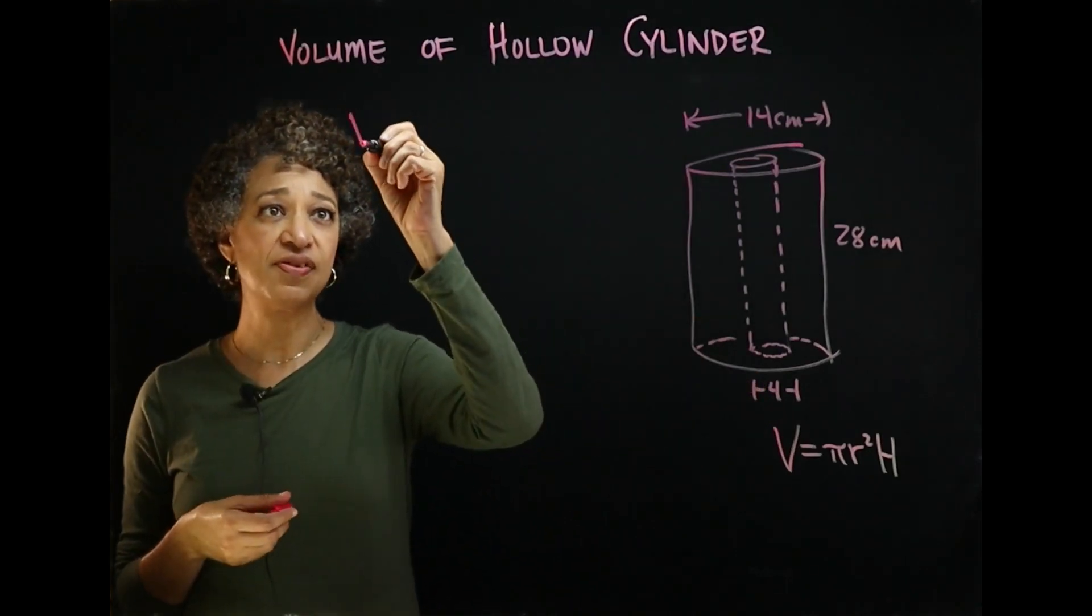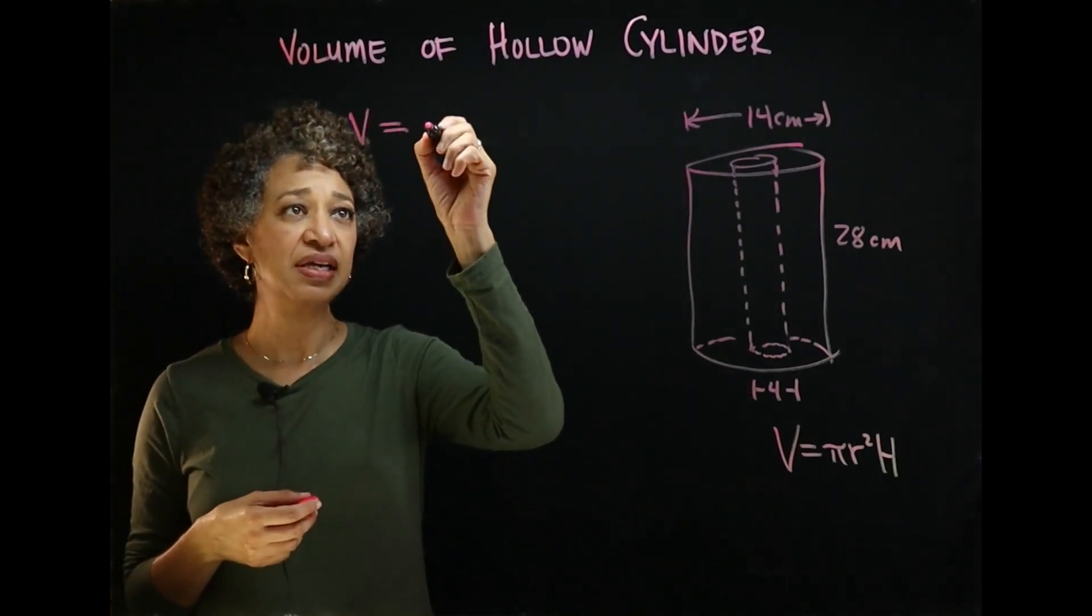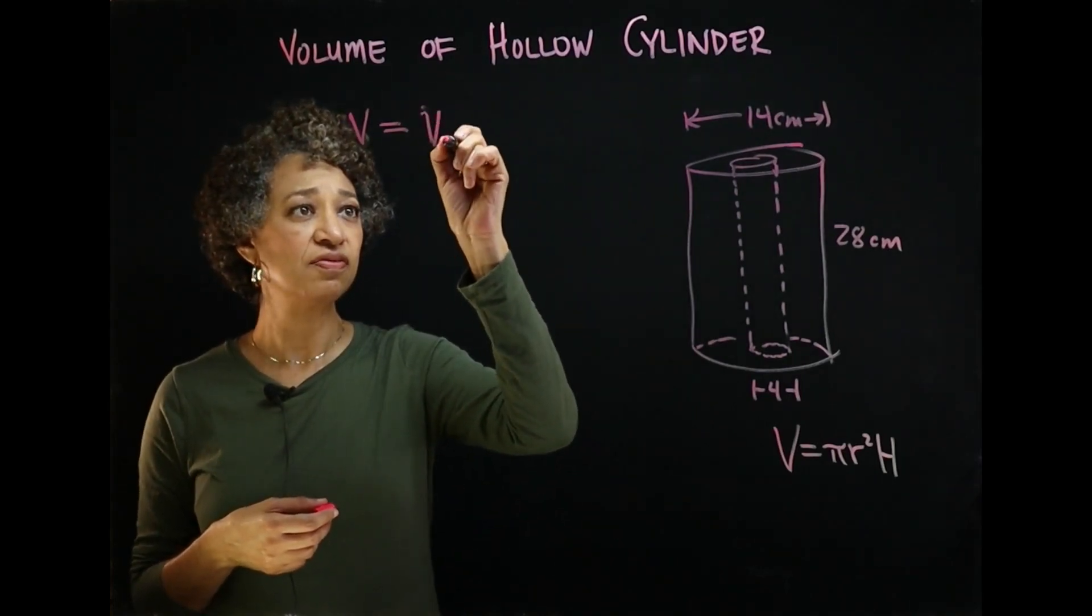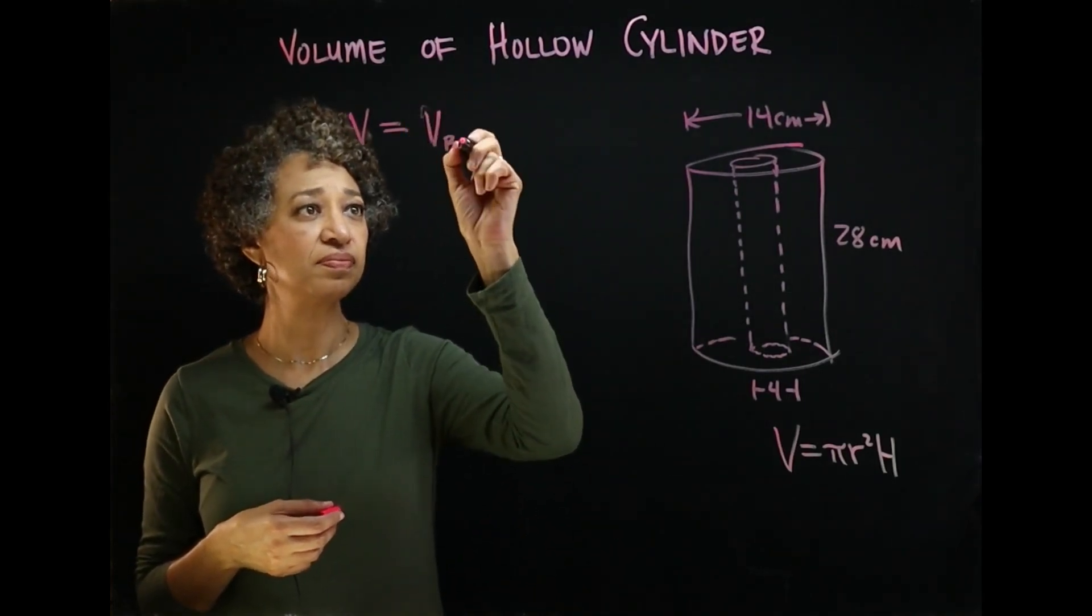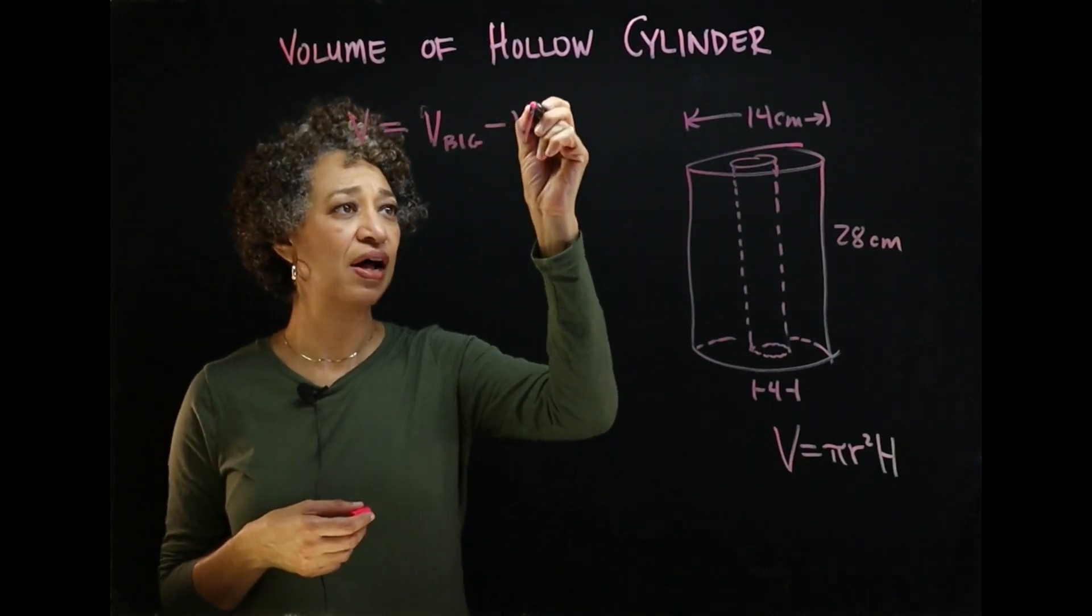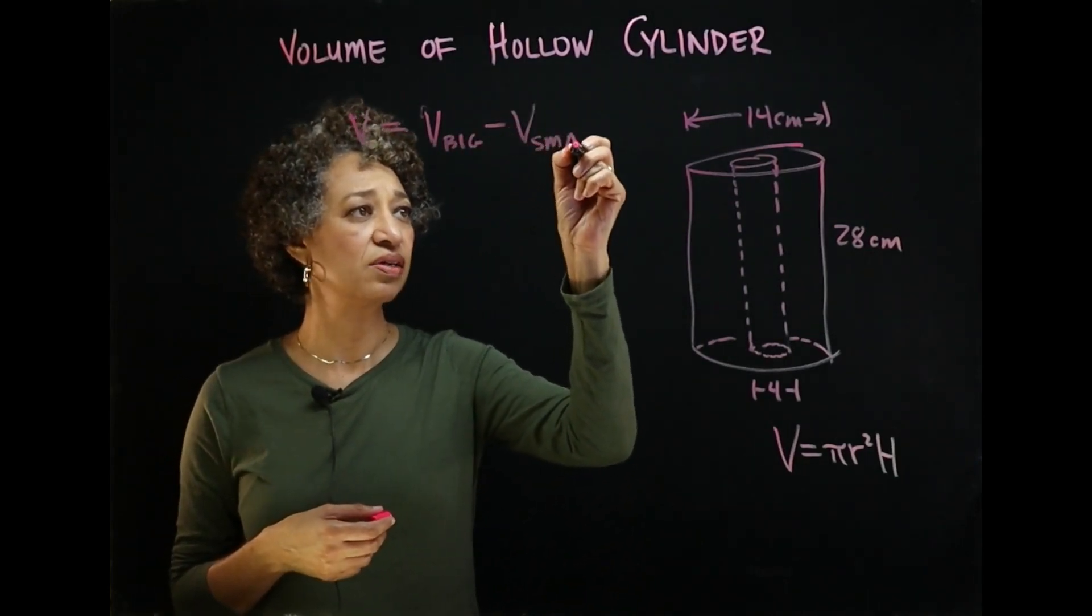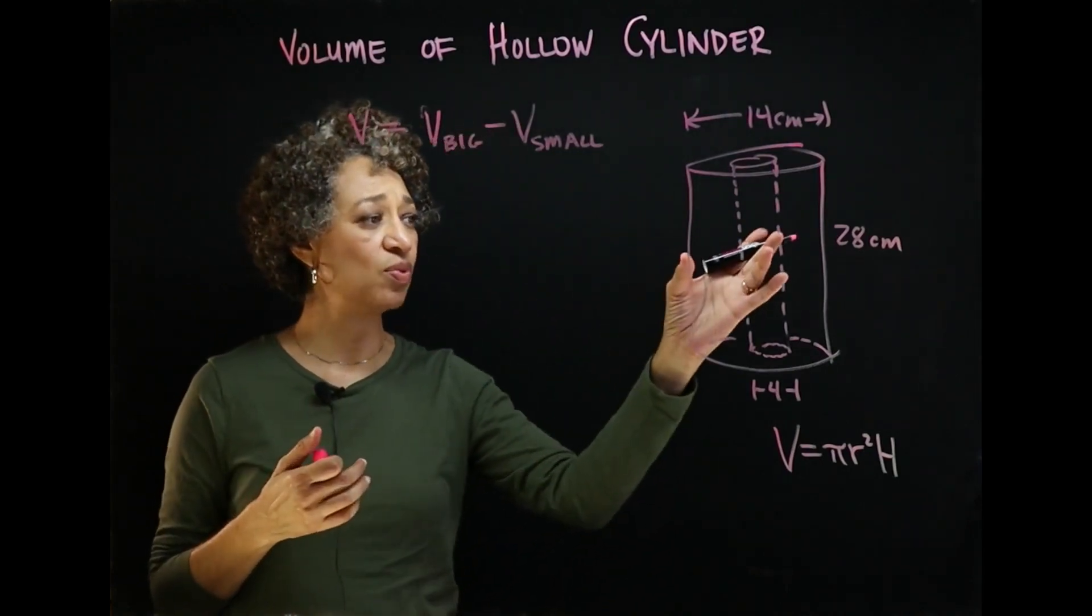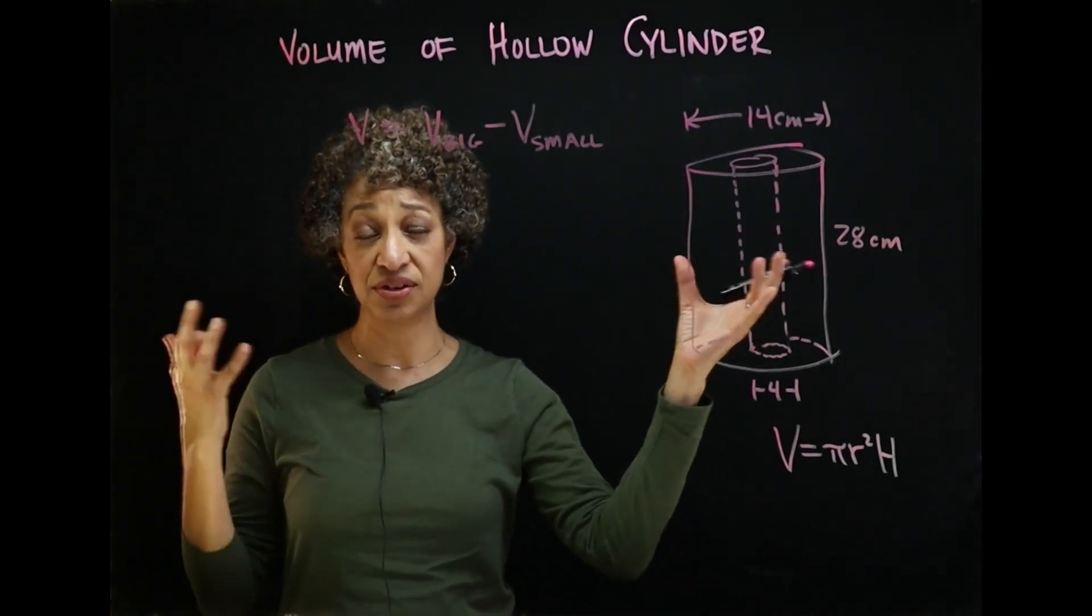So I'm going to say that the volume of our cylinder is the volume of the big cylinder minus the volume of the small cylinder. Okay? So if we can do that, we will get the volume between the two cylinders. That's what we're after.